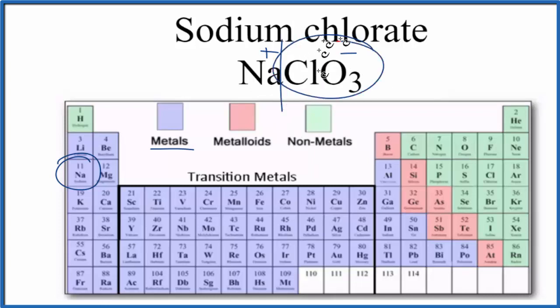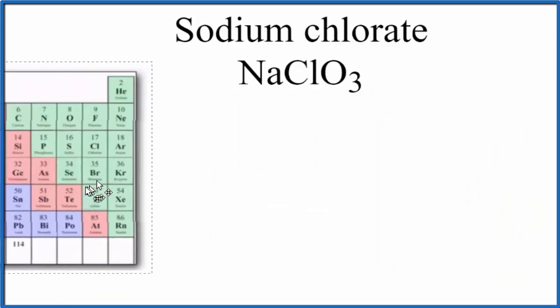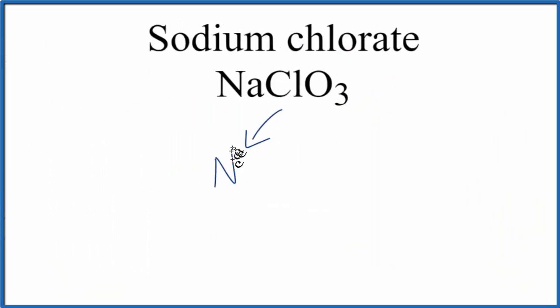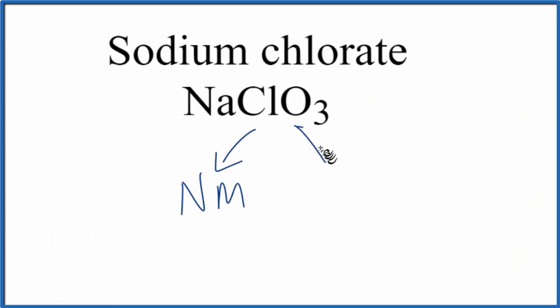Let's talk about the chlorate ion for just a moment. Chlorine is a non-metal, and oxygen is also a non-metal. We have non-metals bonded to non-metals, which gives us a covalent bond. This is also called a molecular bond.